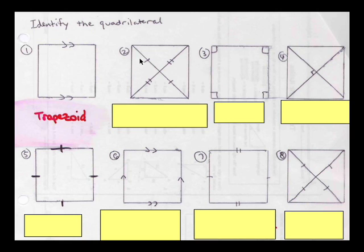Question number two shows us that these two diagonals are cut in equal parts but the diagonals themselves are not equal, and this is a property of parallelograms. Parallelograms have their diagonals bisected.